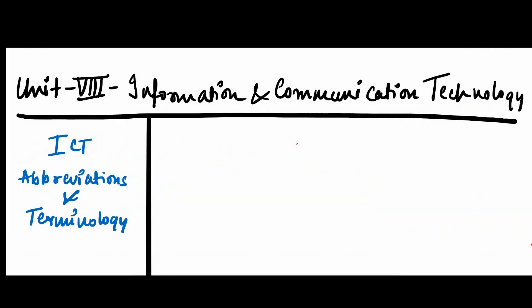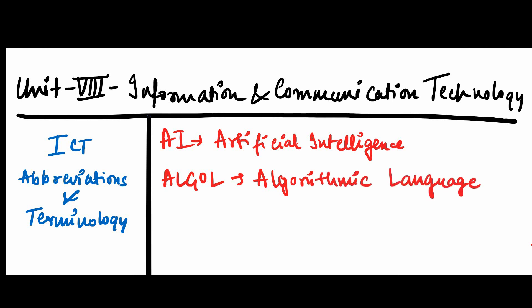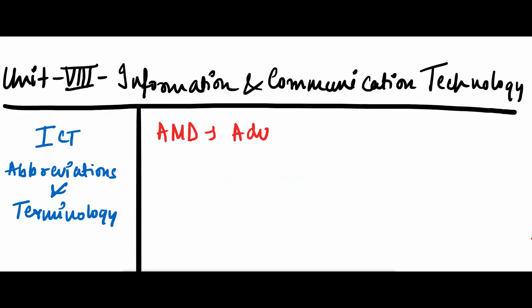The first one is AI — AI stands for Artificial Intelligence. Next is ALGOL, which stands for Algorithmic Language. Next is ABEND, which stands for Abnormal End. Next is AMD, which stands for Advanced Micro Devices.